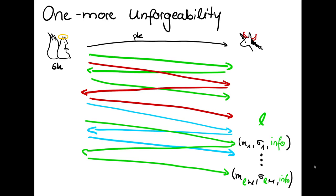If they have interacted L times for a given tag of the user's choice, the user is not supposed to be able to output more than L signatures for that tag.